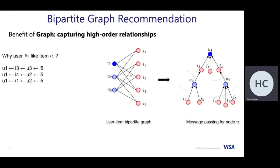One benefit of representing user items as a bipartite graph is that we can capture high-order relationships, which may not be obvious in the user-item rating matrix. For example, in this bipartite graph, we might try to answer the question: why does user 1 like item 5? We can observe that user 1 purchased item 3 before.